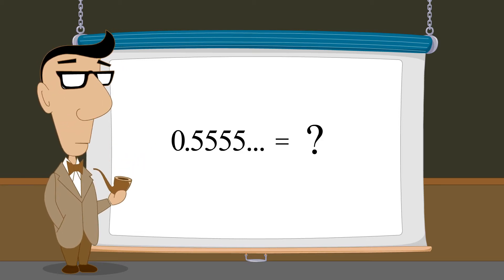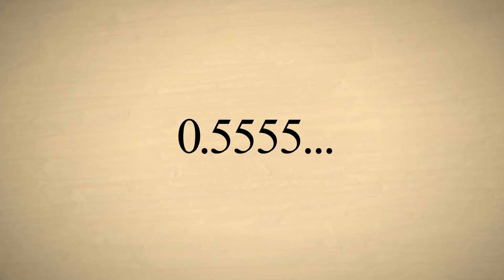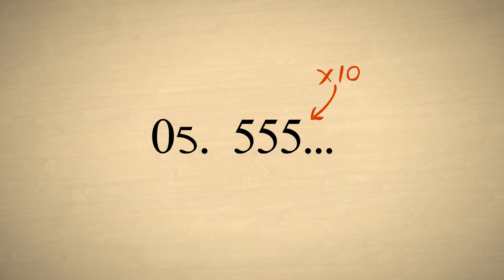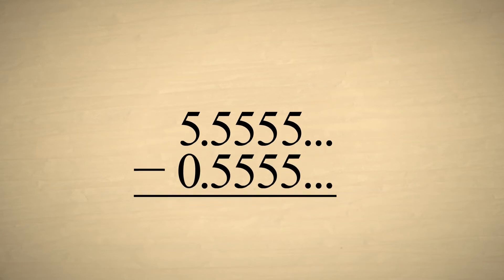Repeating decimal numbers have one or more digits after the decimal point that repeat forever. As an example, let's convert a decimal number with one infinitely repeating digit into a fraction. The first step is to eliminate the infinitely repeating digit. We do this by first multiplying the number by ten to shift it one column to the left, and then subtracting the original number.